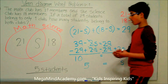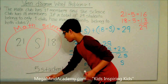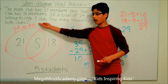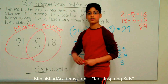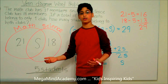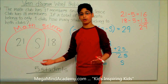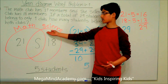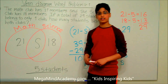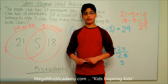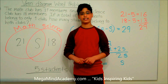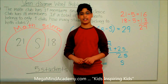That means there are five students who belong to both clubs — the math club and the science club. Today we learned about Venn diagram word problems. Thank you for watching this video.